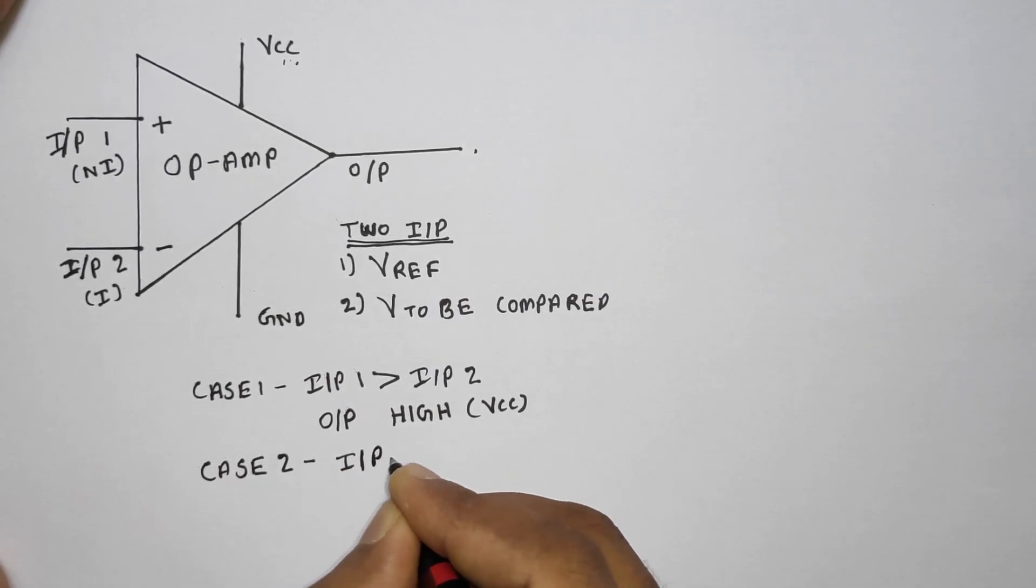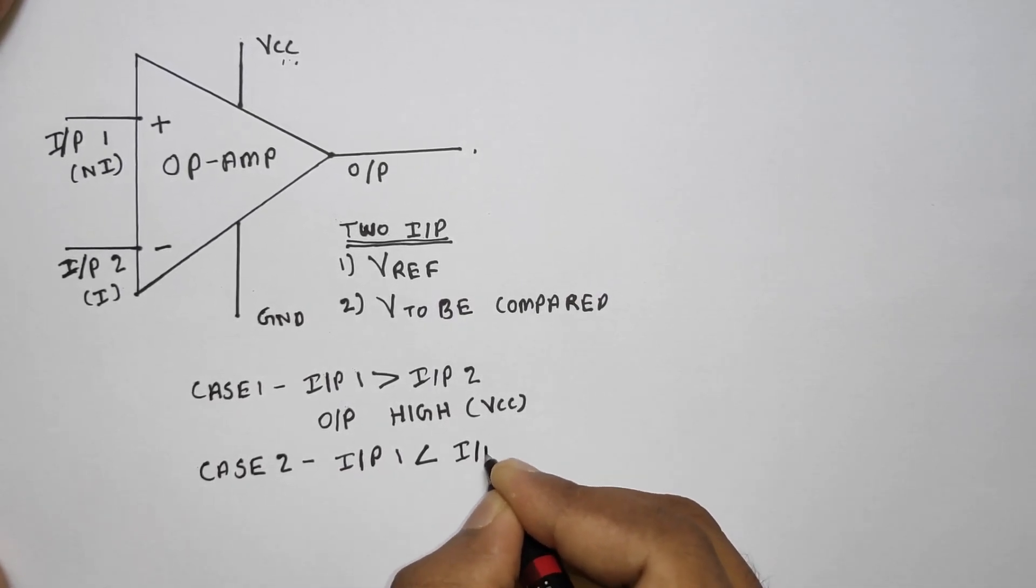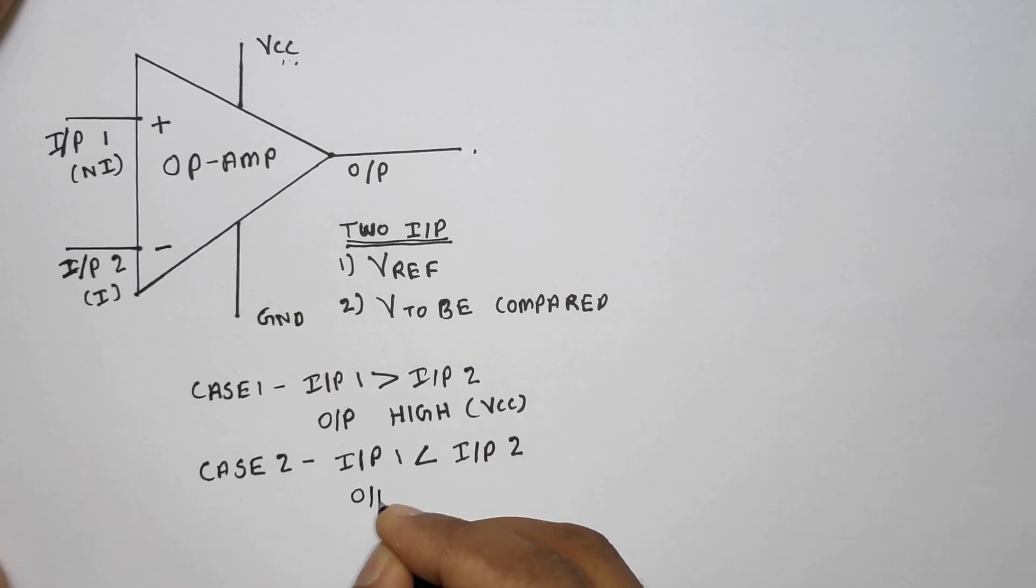In case 2, the input voltage 1 is less than the reference voltage. The output of the op-amp will be low or connected to ground.